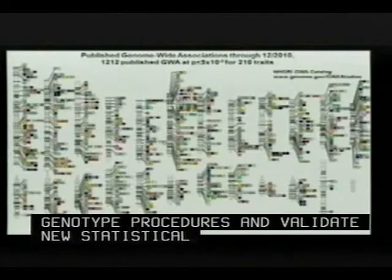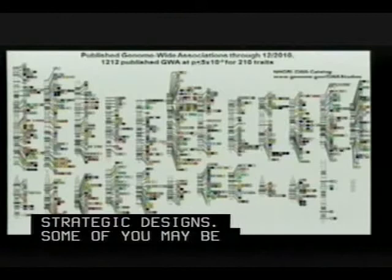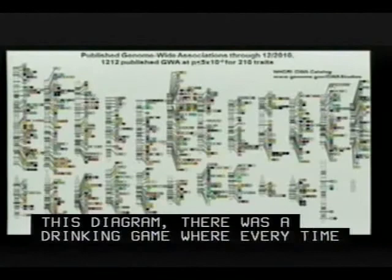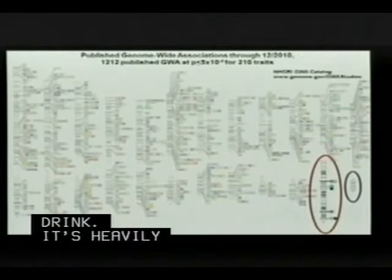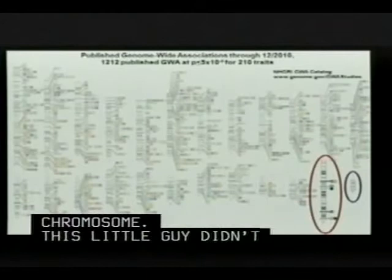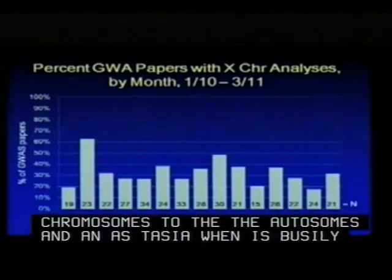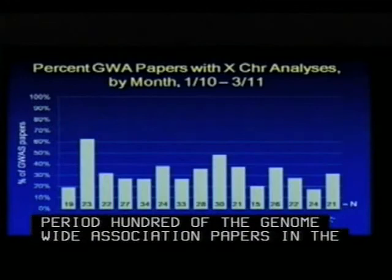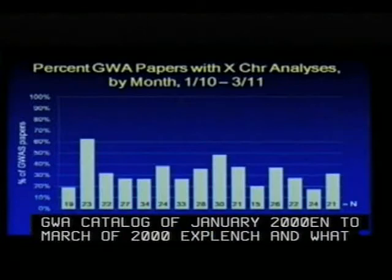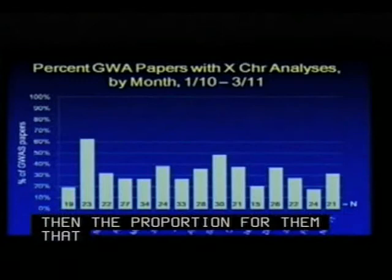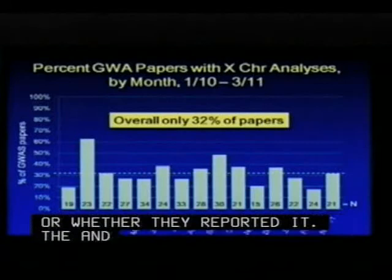Some of you may be familiar with this diagram. I understand there was a drinking game at the latest ASHG where every time you saw this diagram shown, people took a drink. You notice that it's very heavily populated everywhere except in the poor X chromosome. Anastasia with Lin Gee reviewed nearly 400 of the most recent genome-wide association papers in the GWA catalog from January 2010 to March 2011. The proportion of papers that even analyzed the X chromosome — whether or not they found anything — is only about 32%, about a third.